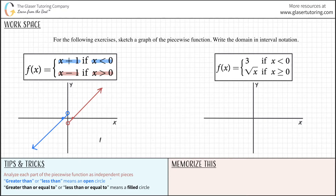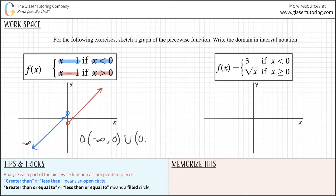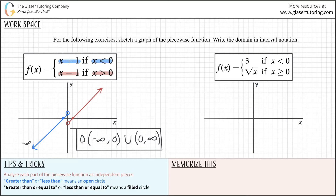The overall domain for the blue part goes from negative infinity all the way up to 0, but not including 0 — so we use a parenthesis. That's negative infinity to 0, exclusive. Then, using the union symbol, the red part's domain goes from 0, exclusive, all the way to positive infinity. So the domain in interval notation is negative infinity to 0, union, 0 to positive infinity: (-∞, 0) ∪ (0, +∞).